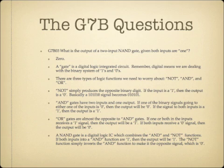What is the output of a two-input NAND gate, given both inputs are one? The answer is zero. A gate is a digital logic integrated circuit dealing with the binary system of ones and zeros. There are three types of logic functions: NOT, AND, and OR. NOT simply produces the opposite binary digit — if the input is one, the output is zero. AND gates have two inputs and one output. If either input is zero, the output is zero. If both inputs are one, the output is one.